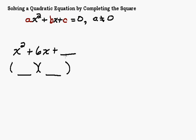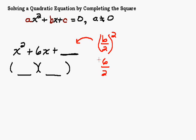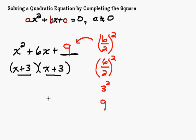The formula for what goes in the blank to complete the square is b over 2, quantity squared. Our b value is what's in front of the x, so the b value here is 6. So we do 6 over 2 squared: 6 over 2 is 3, squared is 9. That's what we put there to make a perfect square trinomial. If we put a 9 there and factor it, we get x plus 3 times x plus 3. Foiling that out gives x squared plus 6x plus 9, so x plus 3 squared equals x squared plus 6x plus 9 — a perfect square trinomial.